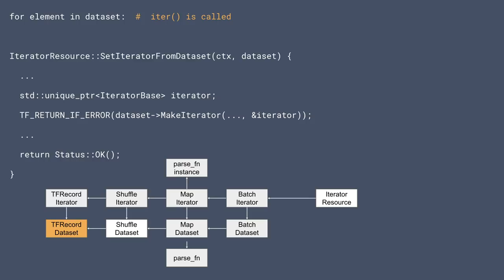A question was raised: does the input pipeline have to be linear, or can it be a DAG? At the dataset level, the input pipeline can be a DAG. At the iterator level, it will always be a tree.